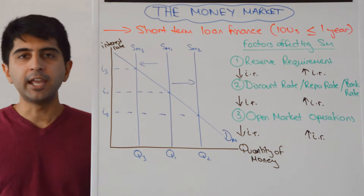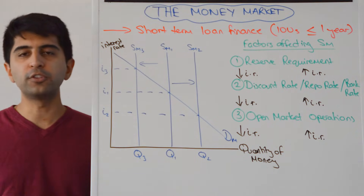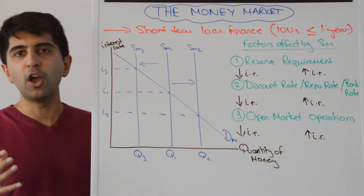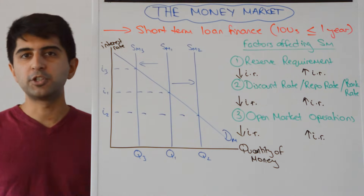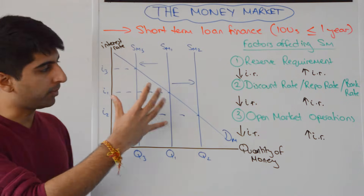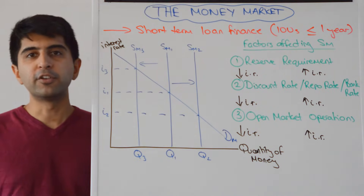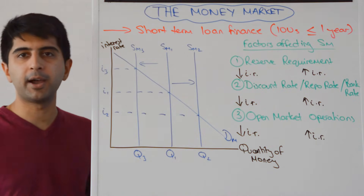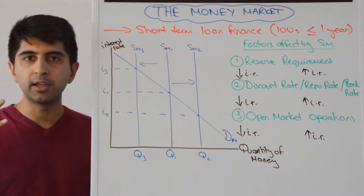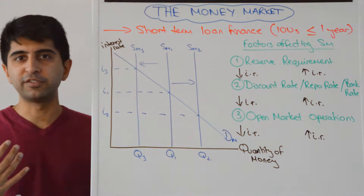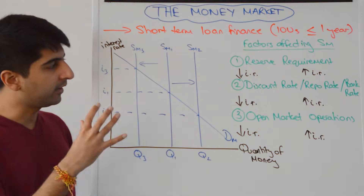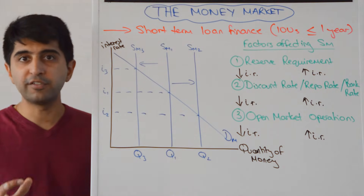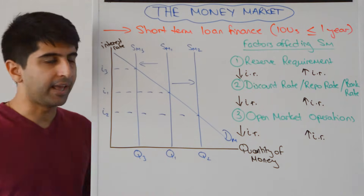Remember what the money market is — it's where financial assets are bought and sold with IOUs of less than or equal to a year, or maturities of a year or less. For example, government bonds with maturities of a year or less are bought and sold in the money market. Any interbank lending between commercial banks takes place in the money market. Any borrowing needs from the central bank by commercial banks to fulfill their liquidity needs will also take place in the money market. These are all money market transactions because they're short-term financial assets with IOUs of a year or less.